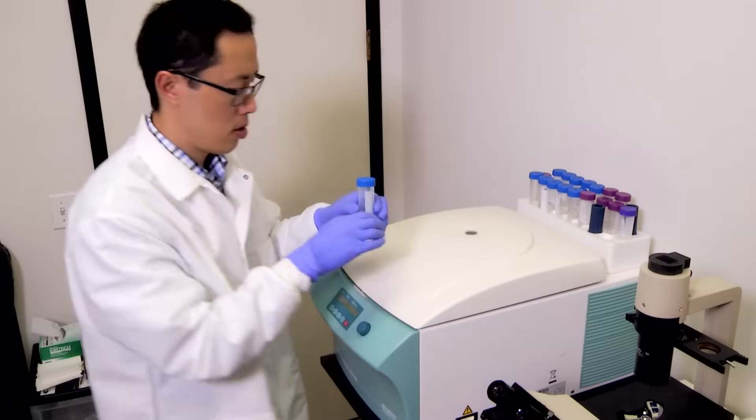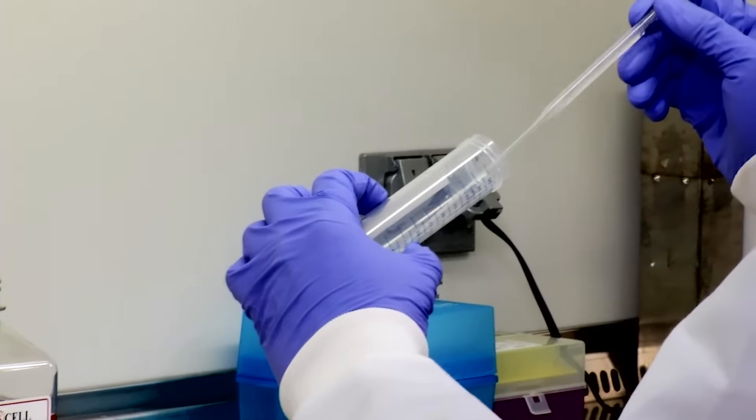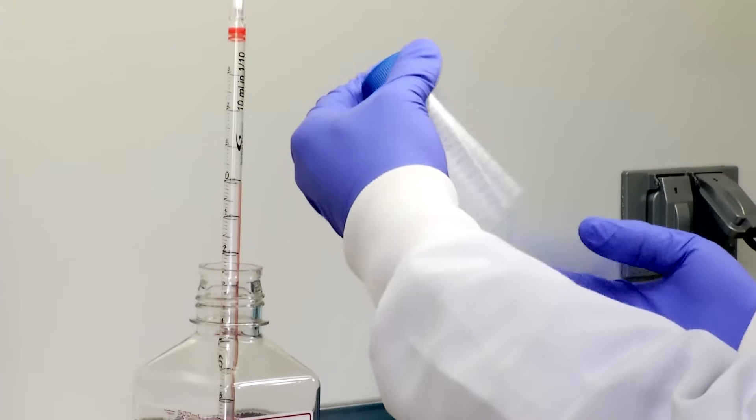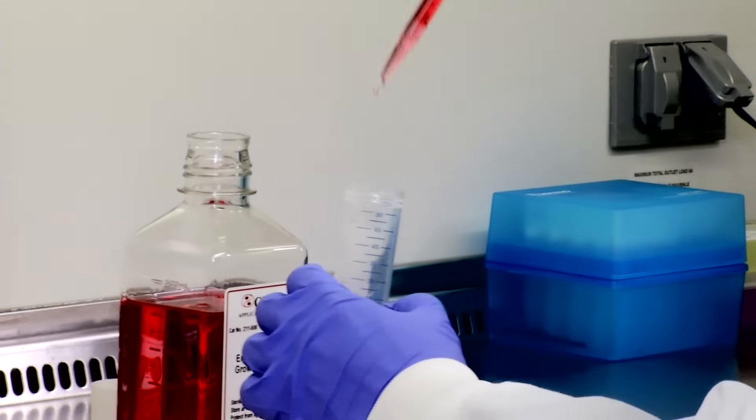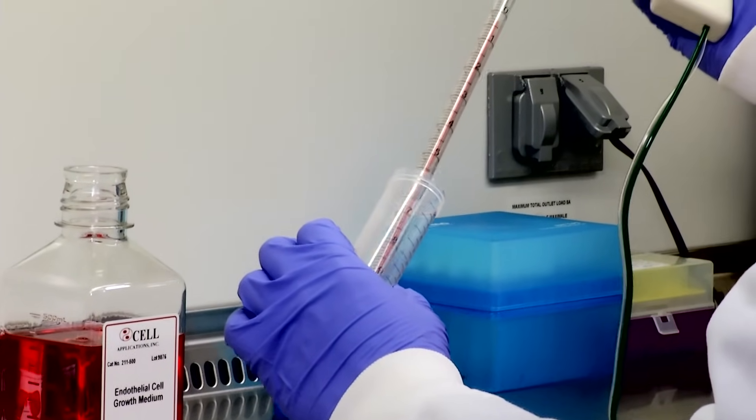Remove tube from centrifuge. Aspirate supernatant without disturbing pellet. Flick tube to loosen pellet. Add 2 ml growth medium and pipette gently to resuspend.